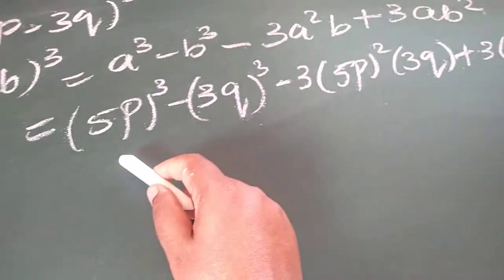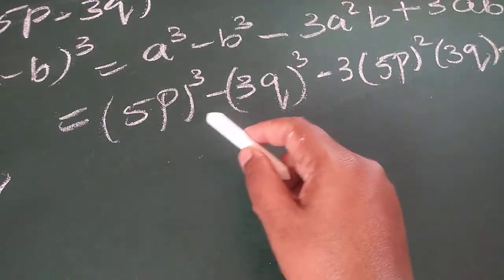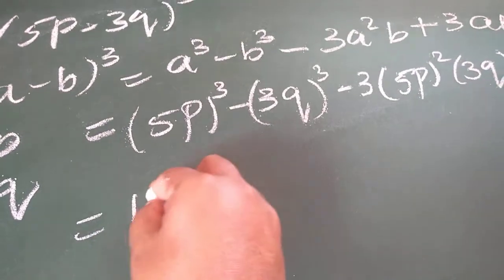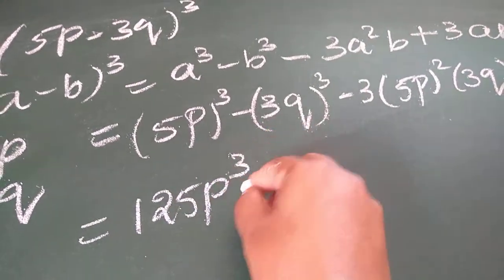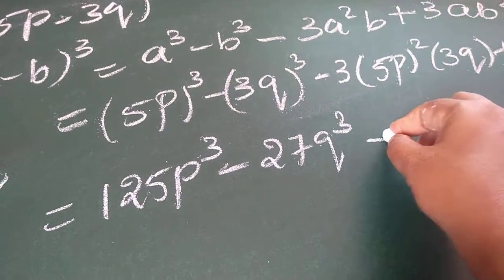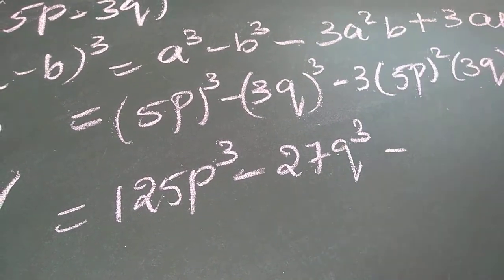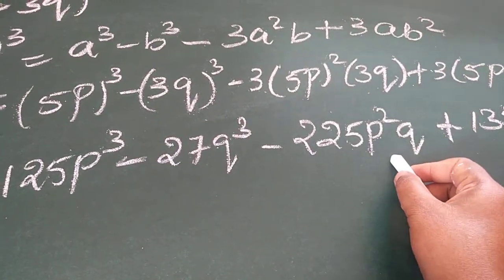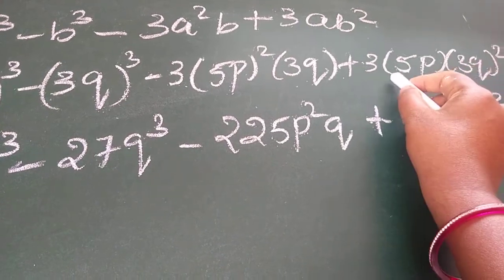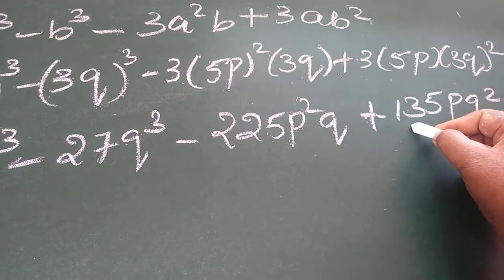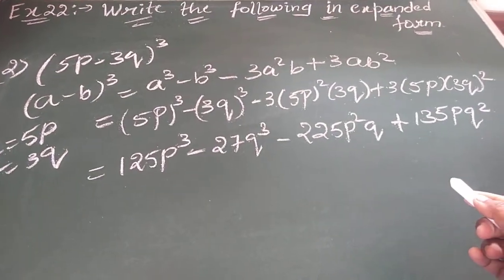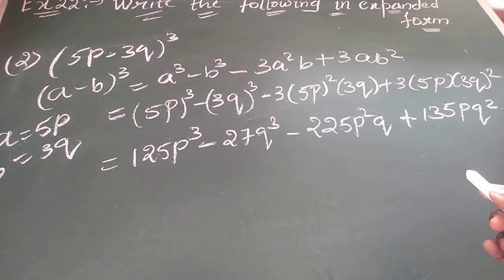Now I am going to cube: 5 cube means 5 into 5 into 5 — that is 25 fives are 125 — so we get 125p cube. Minus 27q cube. Then minus 3 into 5p whole square into 3q: 5 square is 25, 25 into 3 is 75, times 3 is 225p square q. Plus 3 into 5p into 3q whole square: 3 square is 9, 9 into 5 is 45, 45 into 3 is 135pq square. This is the solution for example 22, second part. Kindly copy in your notes by taking a screenshot.